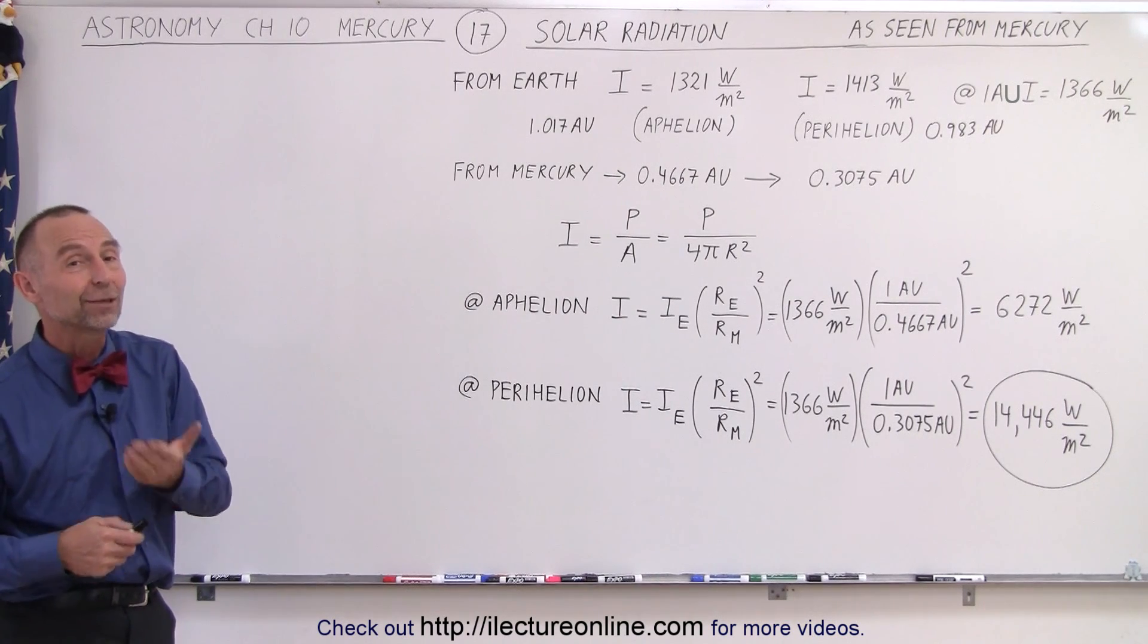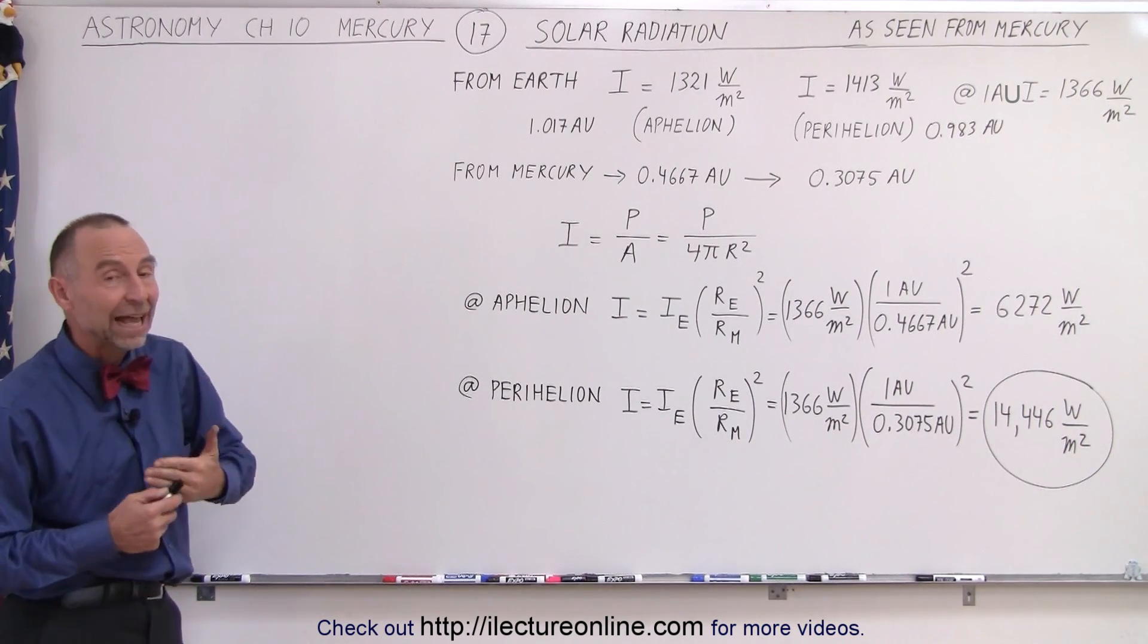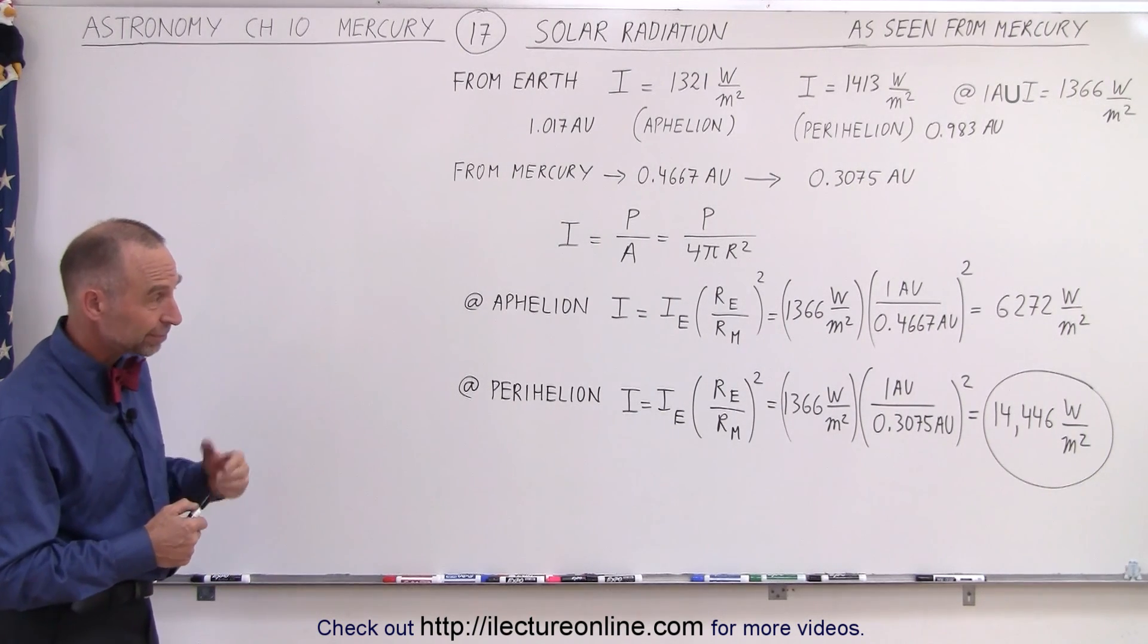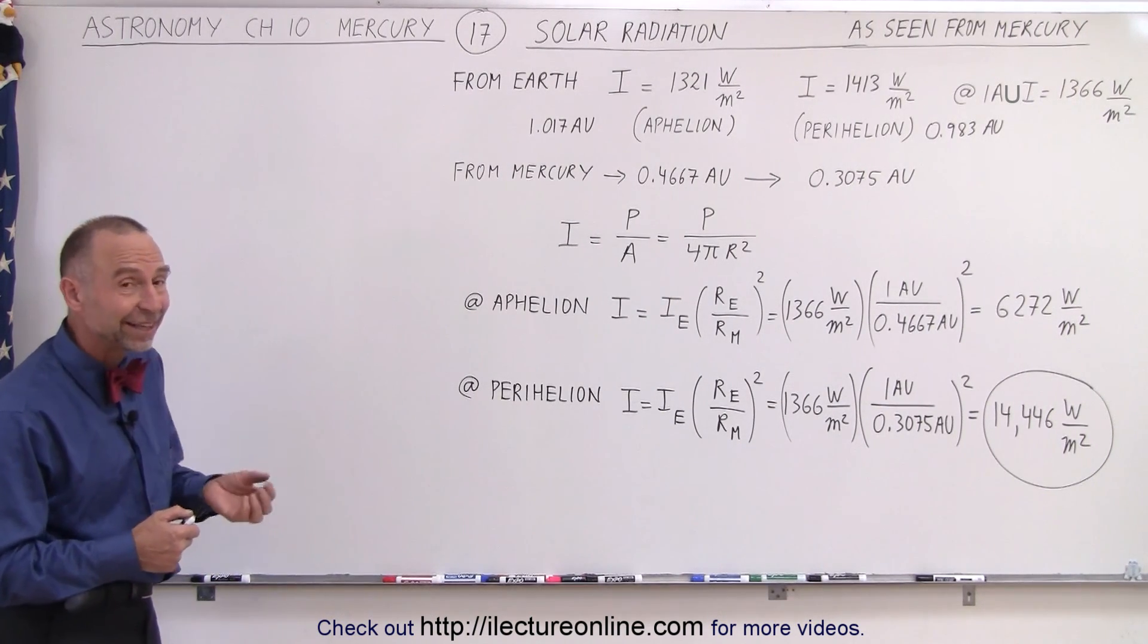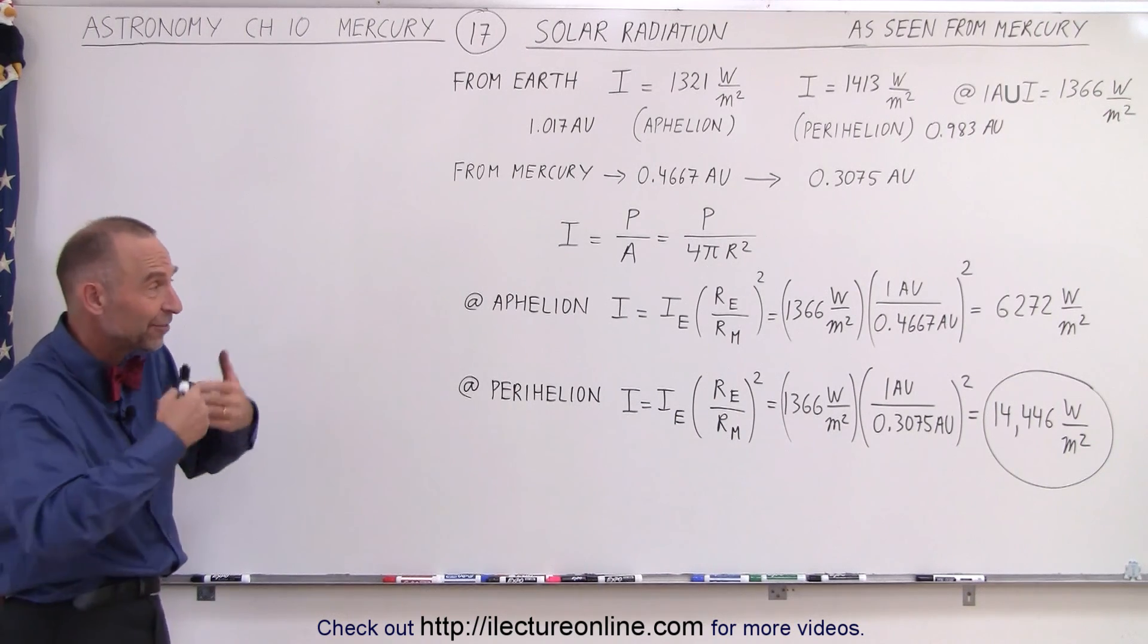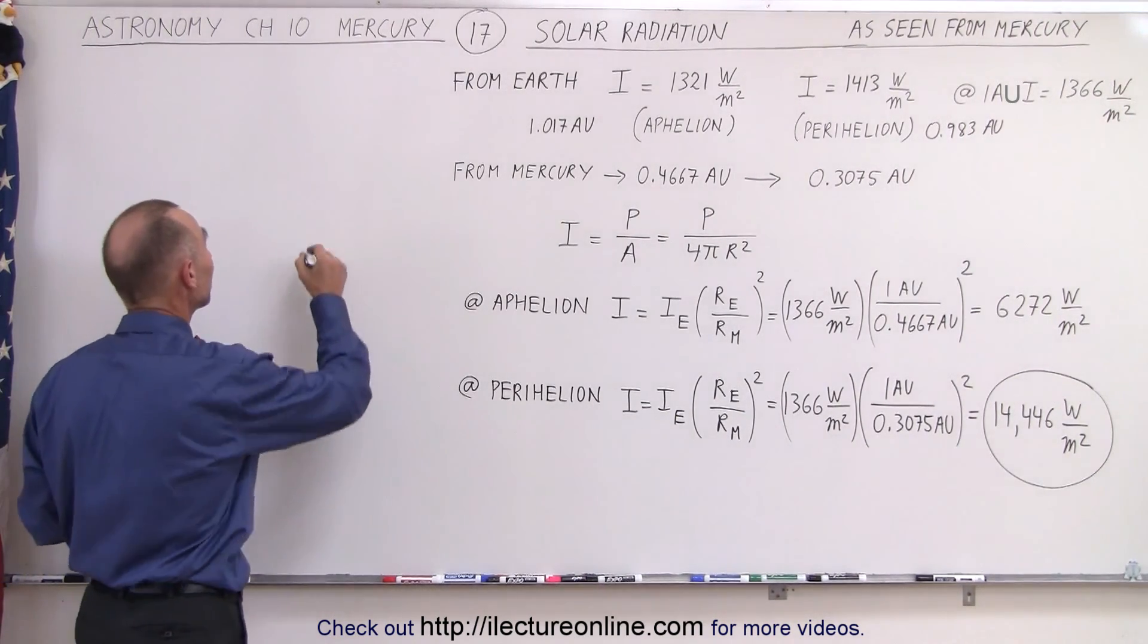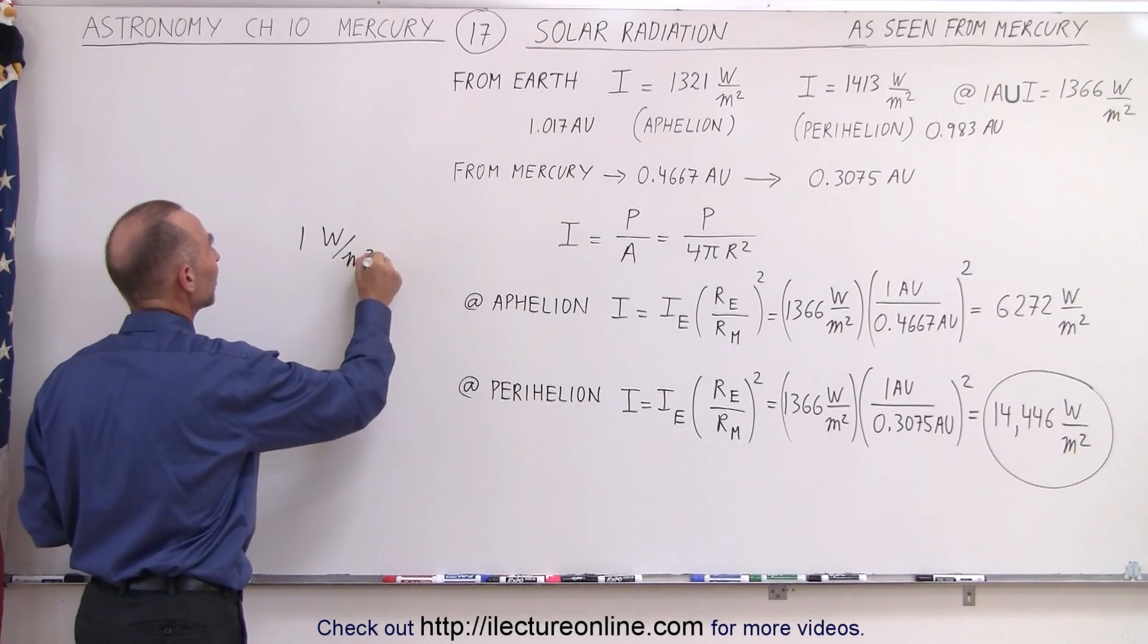Now compare that to what you'd see at Pluto. Pluto, having an average distance from the sun of 40 astronomical units, the power deposited, the amount of heat deposited, the intensity of sunlight on Pluto is about one watt per square meter.